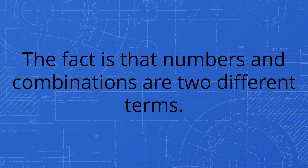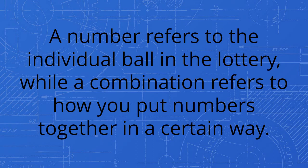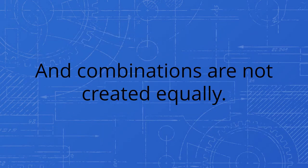The fact is that numbers and combinations are two different terms. A number refers to the individual ball in the lottery, while a combination refers to how you put numbers together in a certain way. And combinations are not created equally.